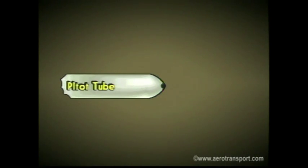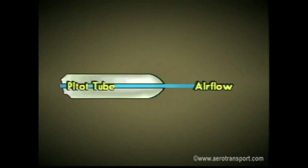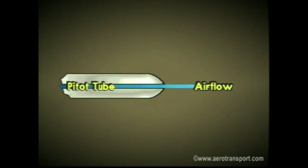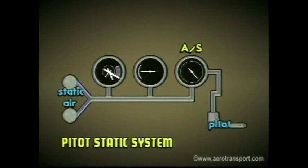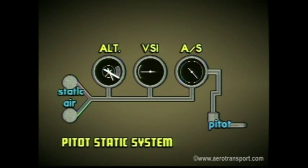The opening of the tube faces the line of flight. As you are flying, the atmospheric pressure in the tube increases due to the movement of the aircraft through the air. The only instrument directly connected to the pitot tube is the airspeed indicator. The airspeed indicator is also connected to the static pressure tube, as are the altimeter and vertical speed indicator.